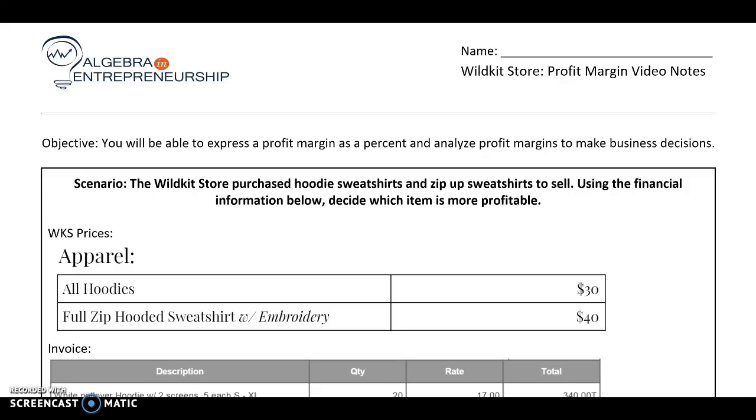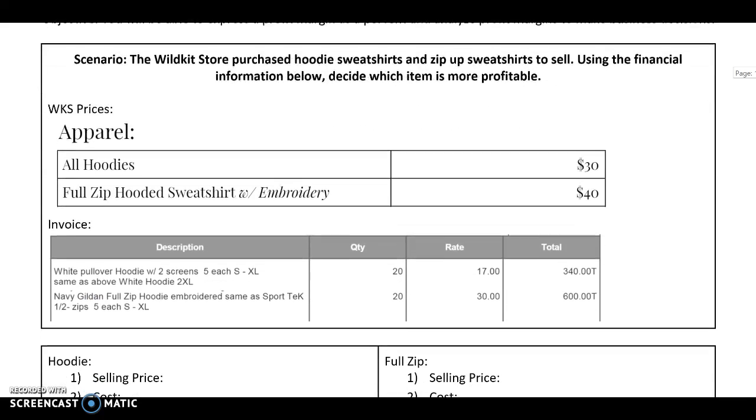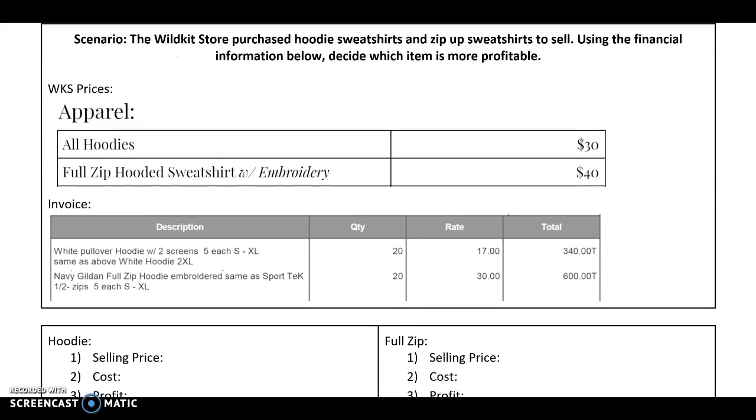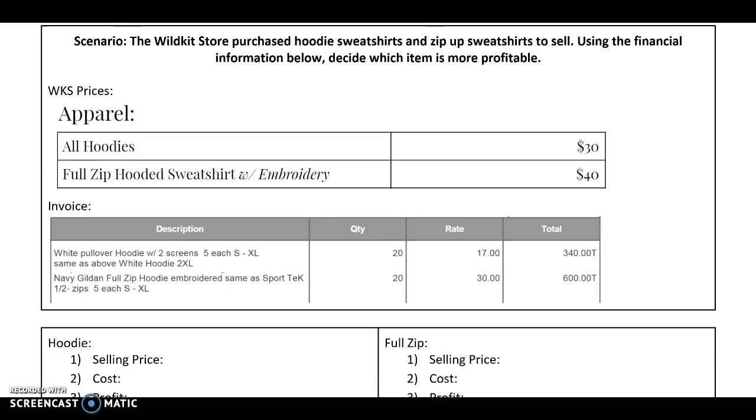I'm going to give you a scenario and then we'll learn the skills to go along with it. In this case, I want to look specifically at the hoodie sweatshirts and the zip-up sweatshirts that we have in the Wildkit store. So what we have here is our Wildkit store price log. This is what we're selling the hoodies and full zips for. And this is the invoice that gives us the information about what we purchased. So the first one's the hoodie, the second one's the full zip.